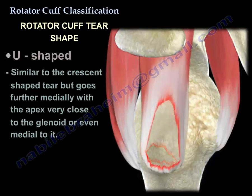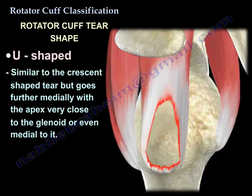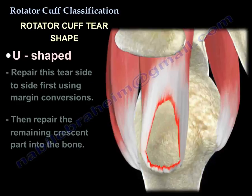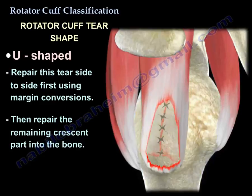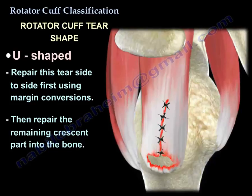The second shape is U-shaped. It is similar to the crescent but goes further medially, with the apex very close to the glenoid or even medial to it. The goal is to convert the U-shaped tear into a crescent tear by repairing it side-to-side using margin convergence first, then repairing the remaining crescent part into the bone.